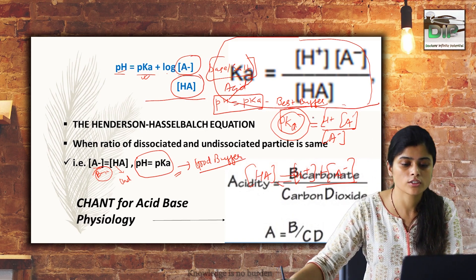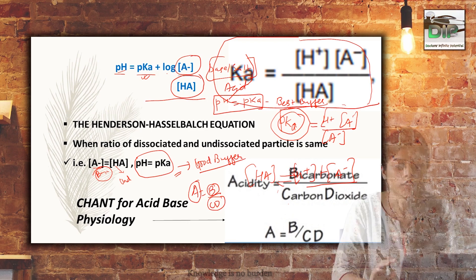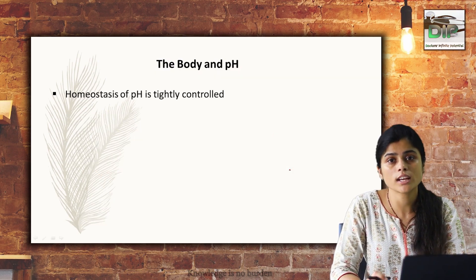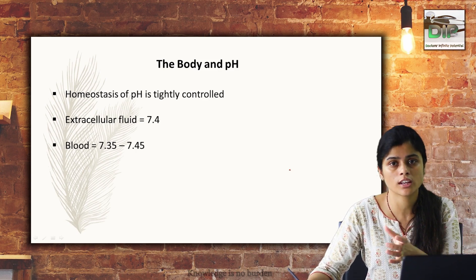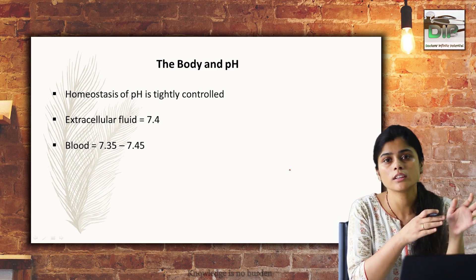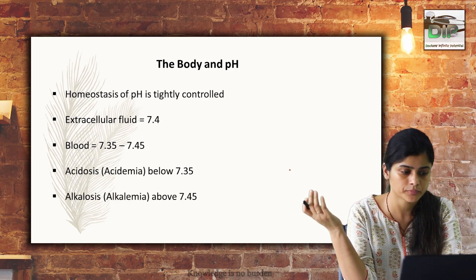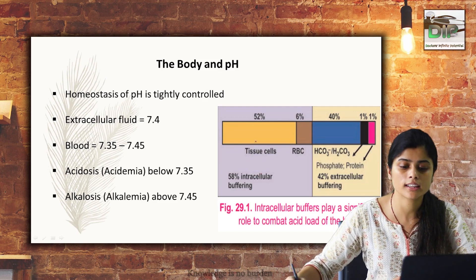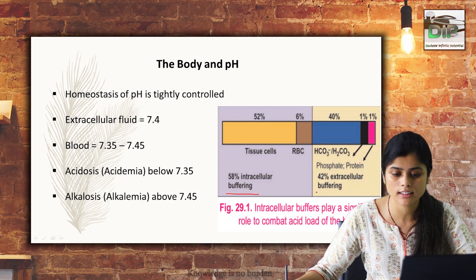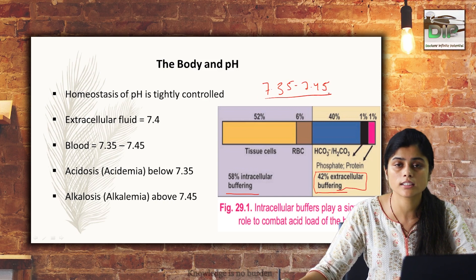The homeostasis of acid-base or H+ concentration is always tightly controlled. The pH of the extracellular fluid is 7.4, and the physiological range of blood pH is 7.35 to 7.45. Lower than 7.35 is known as acidemia or acidosis; higher than 7.45 is known as alkalosis or alkalemia. This picture shows how our body pH is maintained: 58% is intracellular buffering and 42% is extracellular buffering, together maintaining pH within this narrow range.